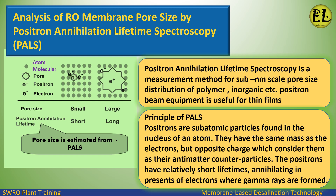Analysis of RO membrane pore size can be performed by Positron Annihilation Lifetime Spectroscopy (PALS), a measurement method for sub-nanometer scale pore size distribution of polymer and inorganic membranes. Positron beam equipment is useful for thin films. The principle of PALS: positrons are subatomic particles found in the nucleus of an atom. They have the same mass as electrons but opposite charge, making them antimatter counterparticles. Positrons have relatively short lifetimes, annihilating in the presence of electrons where gamma rays are formed.